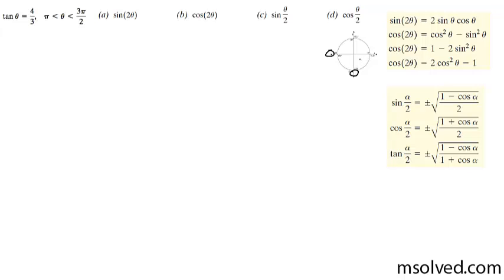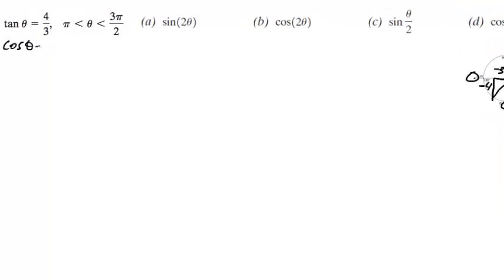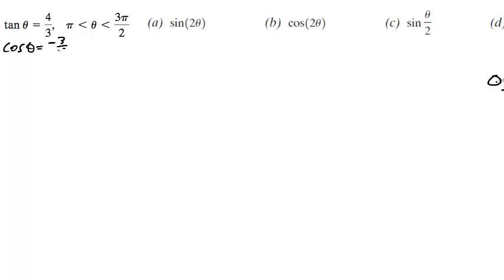Since the tangent is opposite over adjacent, that means that our slope down is going to be equal to 4, and our slope here is going to be equal to 3. Even though these are both negative, they cancel each other out, so it's a positive value. That means that our cosine theta is equal to negative 3 over 5, and our sine theta is equal to negative 4 over 5.